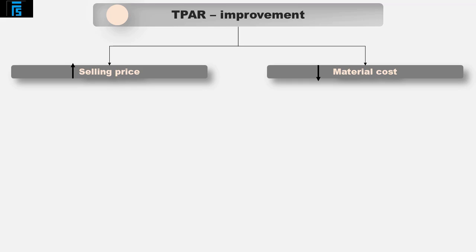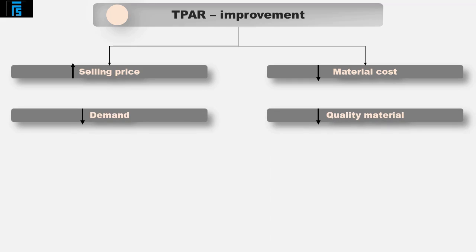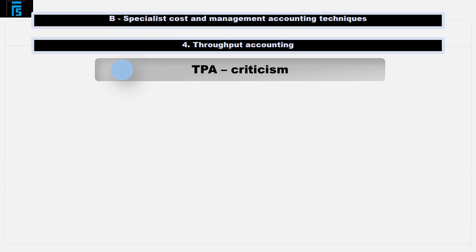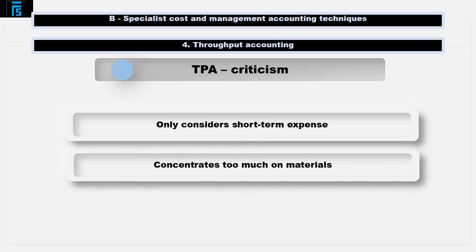Increasing selling prices may result in a reduction in demand, or using a lower quality material would result in higher levels of wastage and a lower output. We could also look to improve productivity and thereby reduce the time spent making each unit, and as a result we could make more units in the time available. Please be aware that there are a number of criticisms of the throughput accounting ratio. It only considers the short term when operating expenses are mainly fixed, and it concentrates too much on materials, excluding other costs that might impact on the profitability of the products being produced based on the ranking approach discussed.